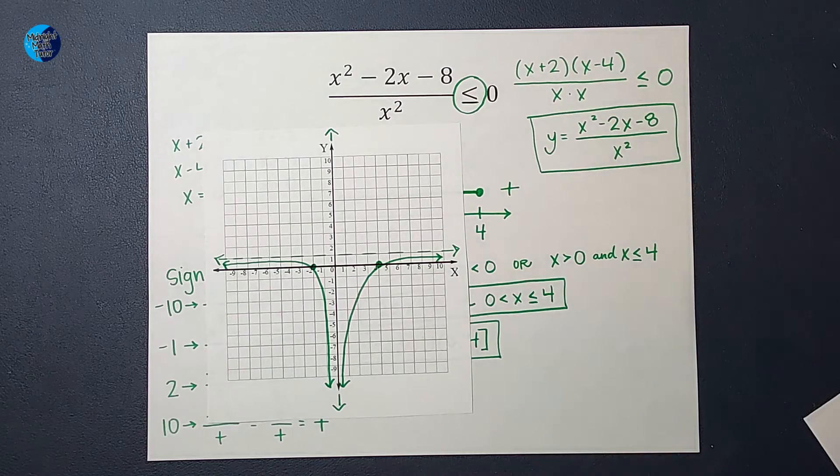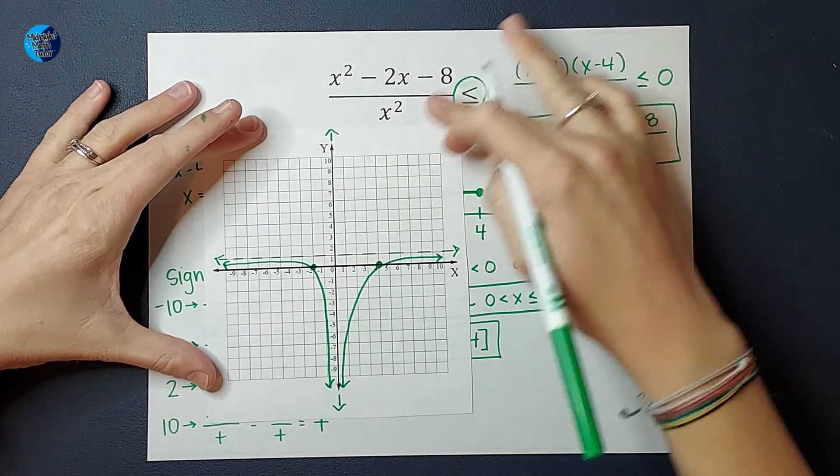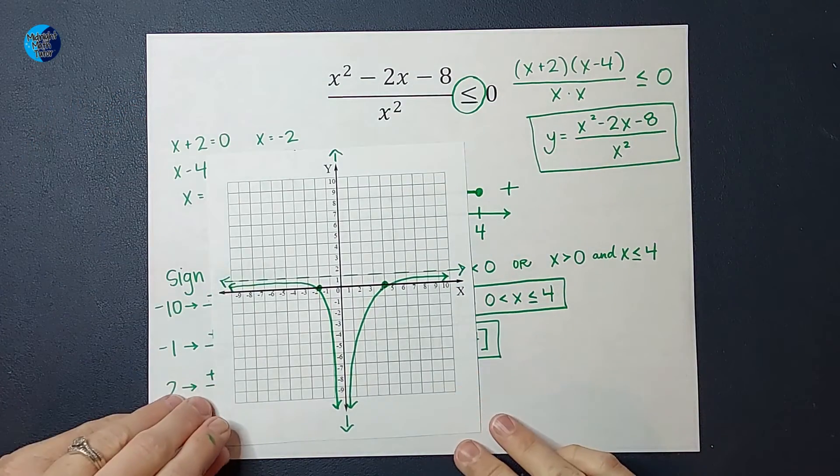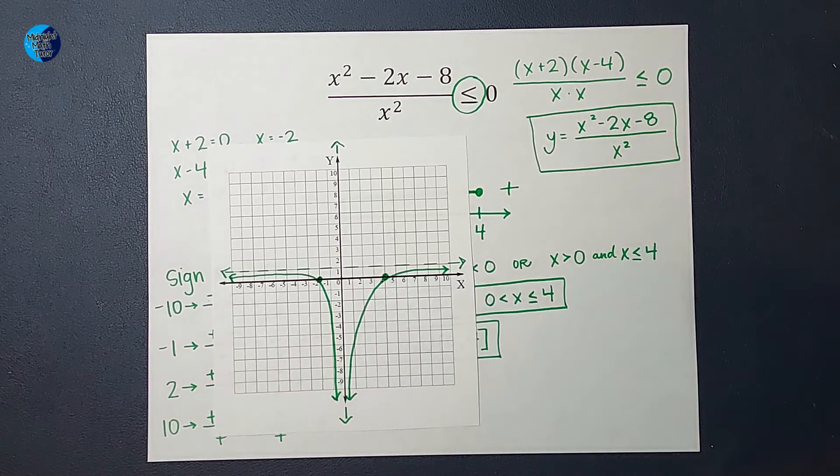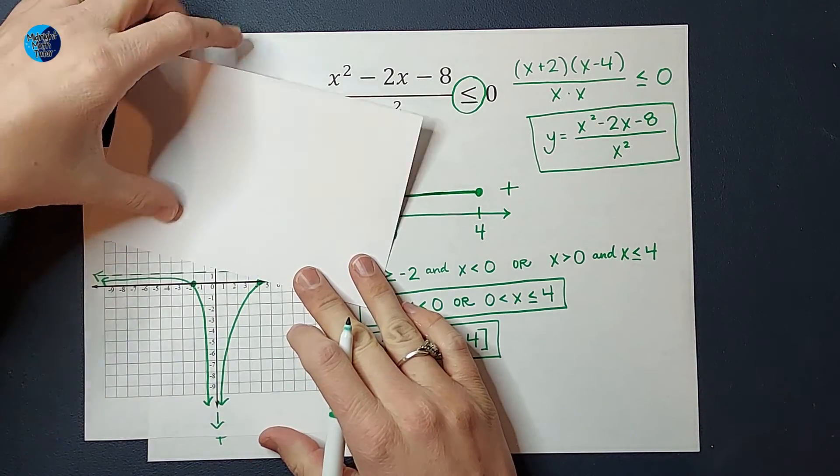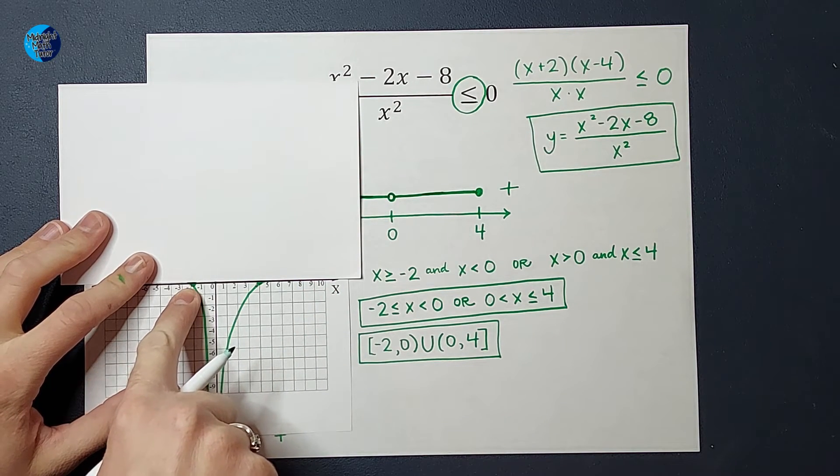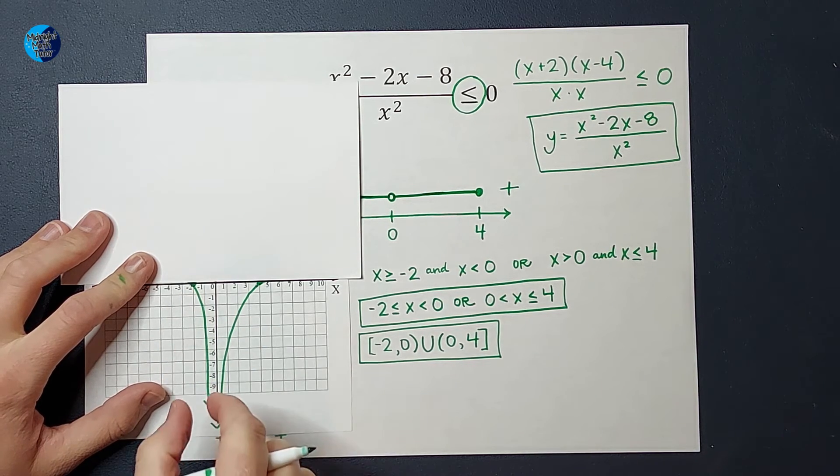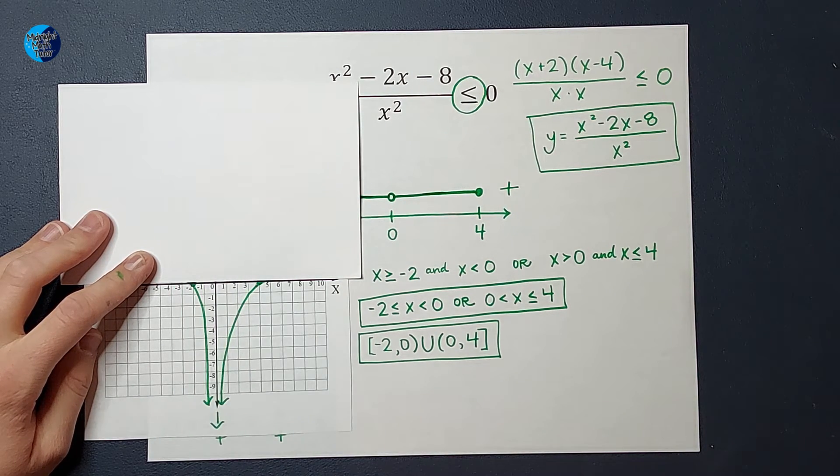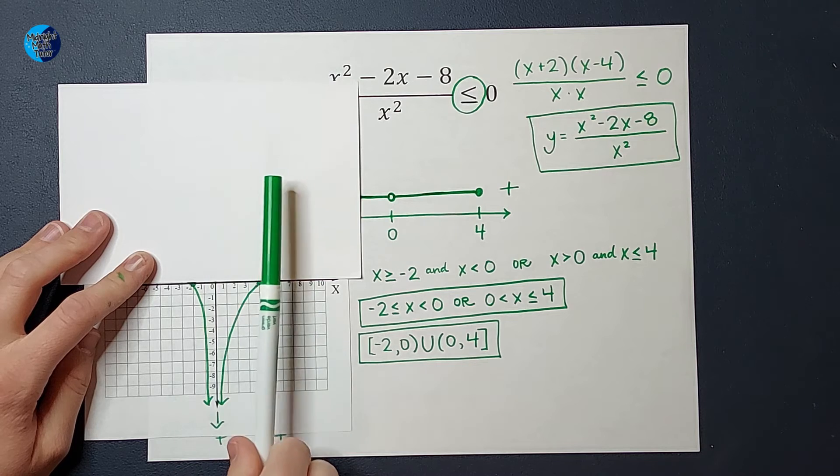So, what was I originally being asked, guys? I was being asked, where is this less than or equal to 0? Well, this is a graph representation of this. Where is it less than or equal to 0, guys? Let's take a look. We are less than or equal to 0 from negative 2, that x-intercept, to 0, but not including 0. Both of those lines are going to get closer and closer and closer to 0, but never actually touch it. So, we are less than 0 from negative 2 to 0, not including 0. And then, we're also less than 0 from 0 to 4.